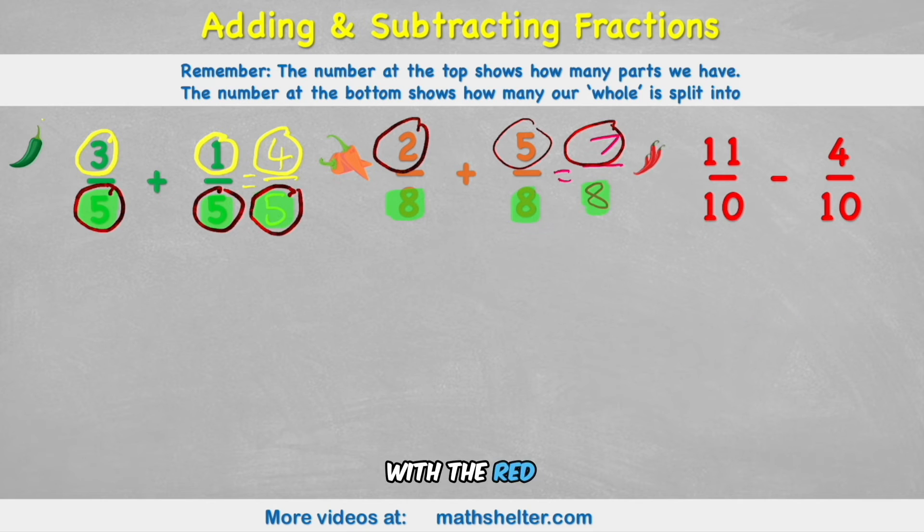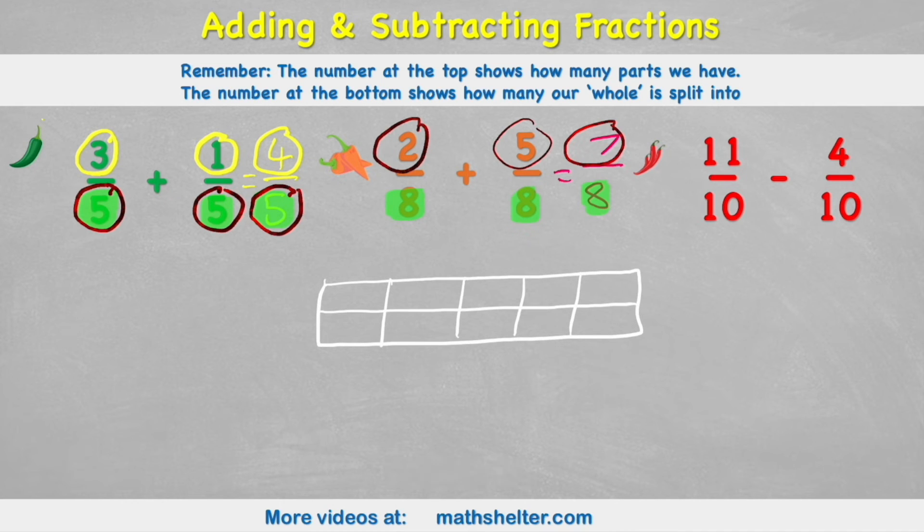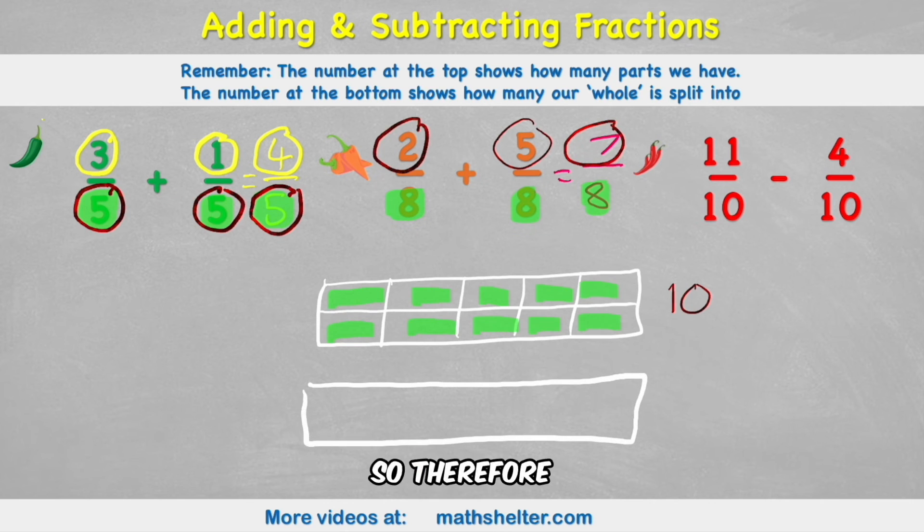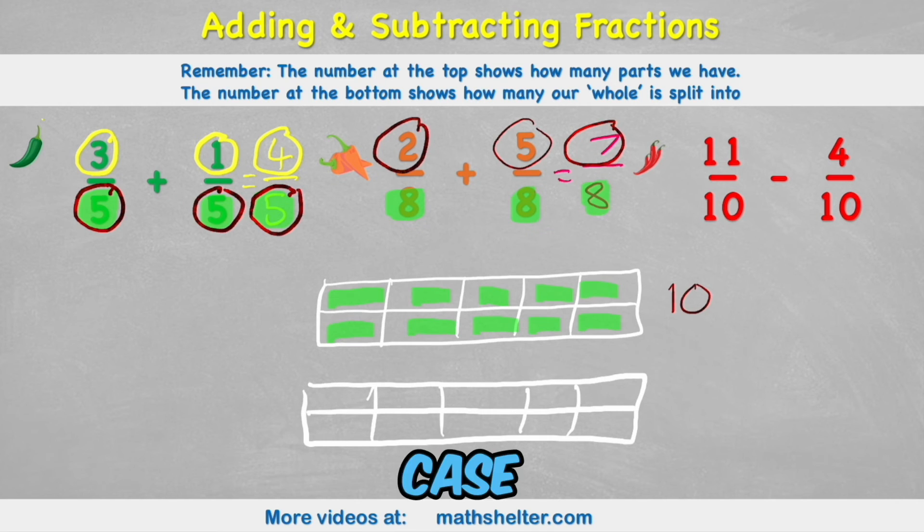Let's do our last example with the red chilli challenge. We have 11 tenths, subtract this time, 4 tenths. So this is a little bit different. Because this is like saying that I have a chocolate bar that's been split into 10. But I have 11 of them. So I have 1, 2, 3, 4, 5, 6, 7, 8, 9, 10. Uh-oh. So I only have 10 in this first chocolate bar. So what can I do? Well, this is why this is a red chilli challenge. Because we need to understand that we can have another 1. So therefore, I would have another 1 that's been split into 10, just like before. And in this case, I only have 1 of them. And together, they would make up my 11. So now I have my 11 tenths.